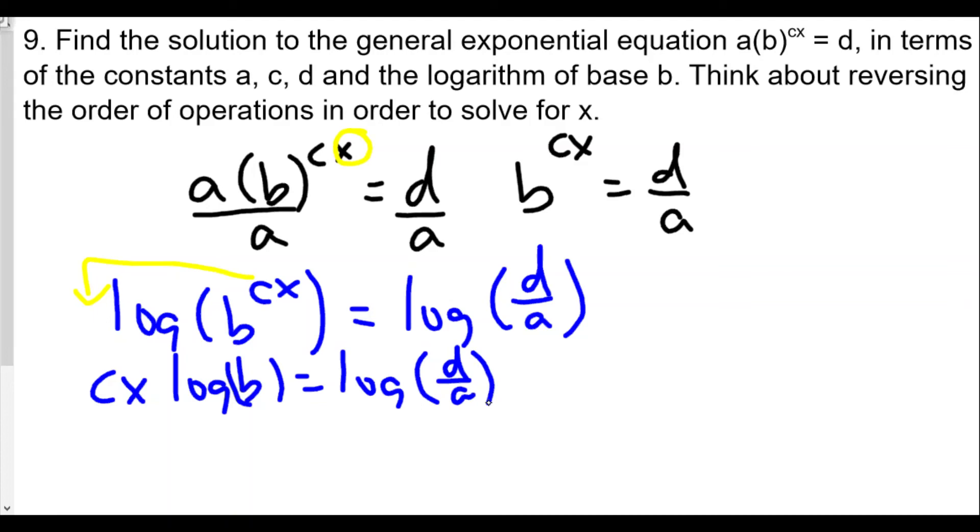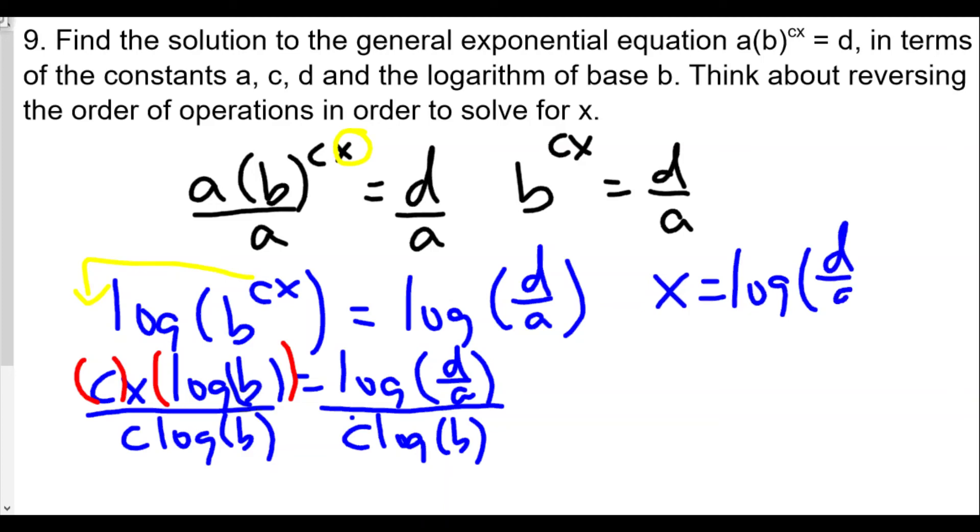We'll divide both sides by, well, to get x by itself, we can combine a couple things. We're going to divide by the log base b and also by c. So we're going to divide both sides by c log base b. And so we get x equals log of d over a divided by c log base b.